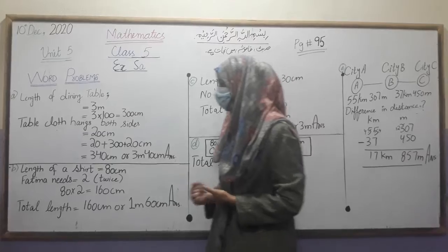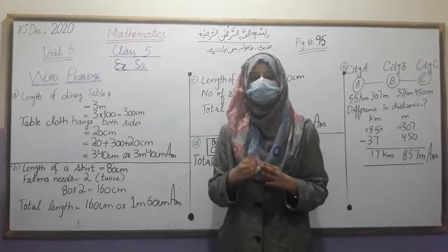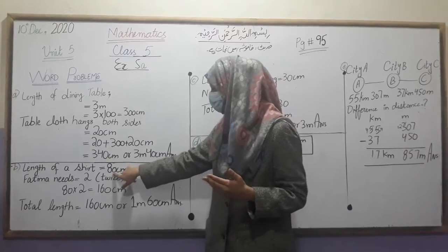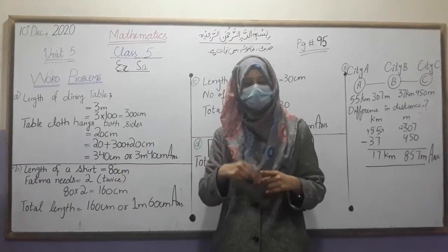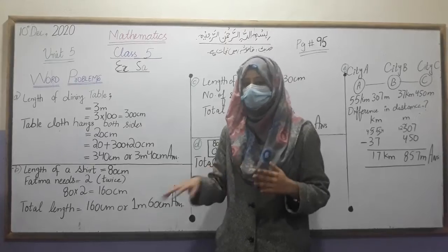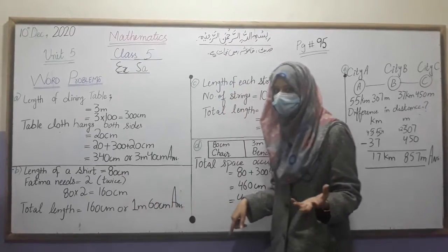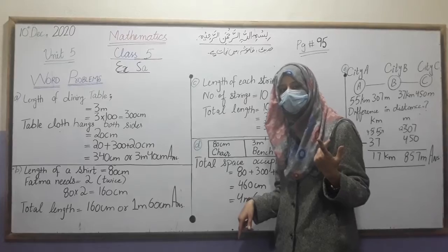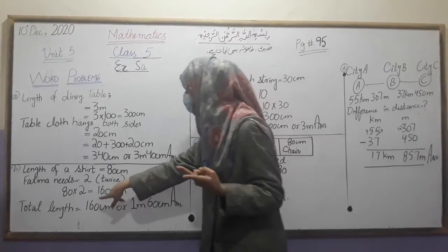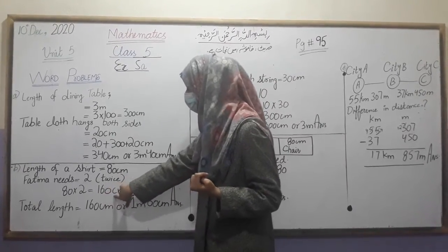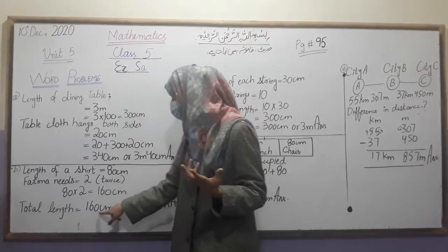Now the second word problem: we have 80 cm and it is required to be doubled. So we multiply 80 cm by 2. We multiply it twice, and the total length comes out to 160 cm.